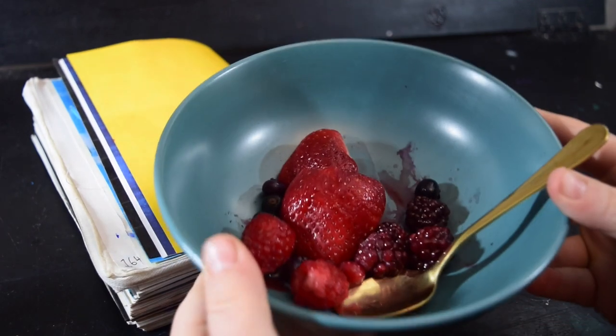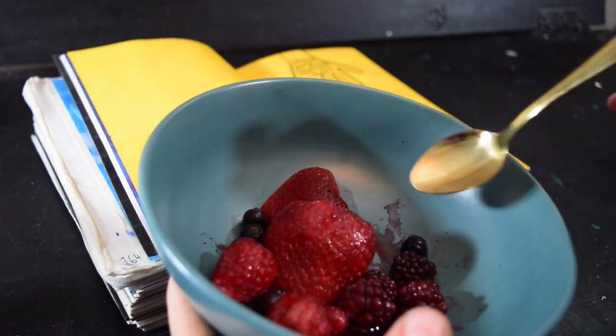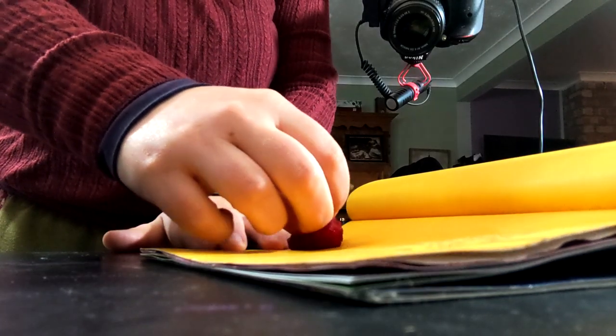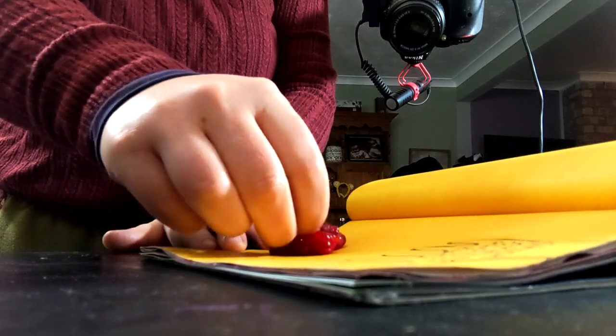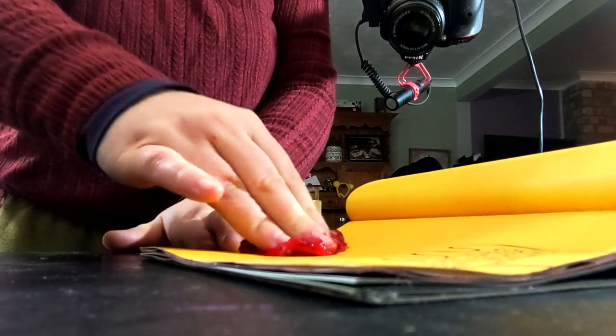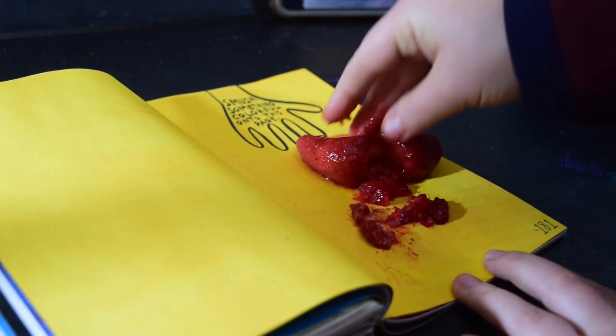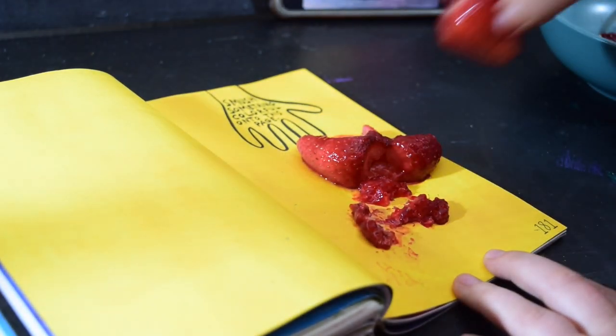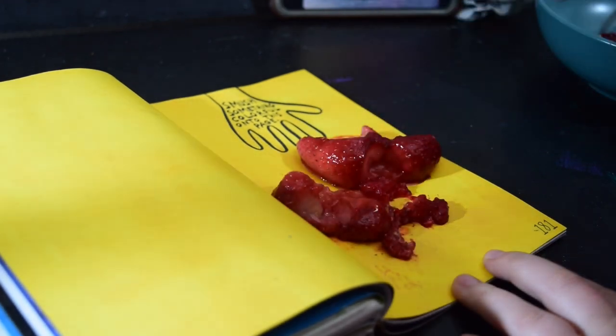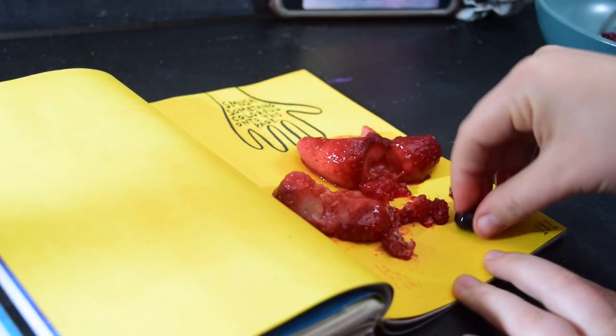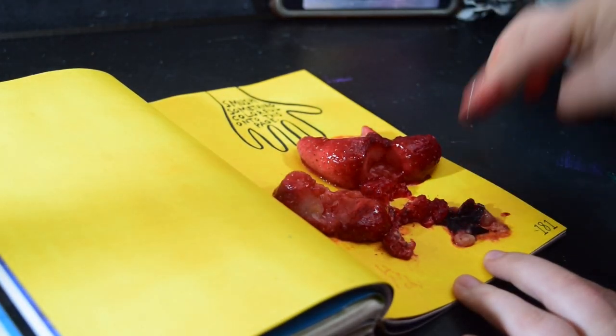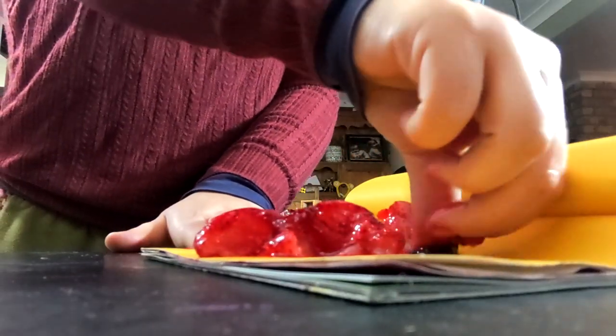I got a bag of frozen fruit and warmed it up in the microwave a little bit, which helped because I could really squish this stuff onto the page. As you can see, I'm going quite carefully to start with, but then when I snapped that strawberry in two I just went for it.